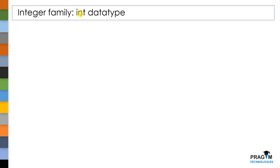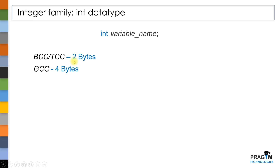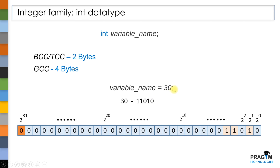Now let's see about the int data type. To declare an integer variable, we have to use the keyword int. The size of this integer variable depends upon the compiler we are using. In our previous session, I explained how when we assign a value to an integer variable, it gets stored in its memory space.